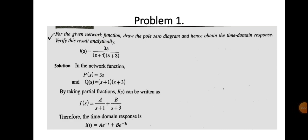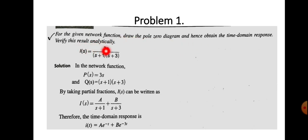For the given network function, draw the pole-zero diagram and hence obtain the time domain response. Verify this result analytically. Here, I(s) is equal to 3s divided by (s+1)(s+3). First, you have to draw the pole-zero diagram, then find the time domain response from that diagram, and also verify the result analytically using the usual mathematical procedure.